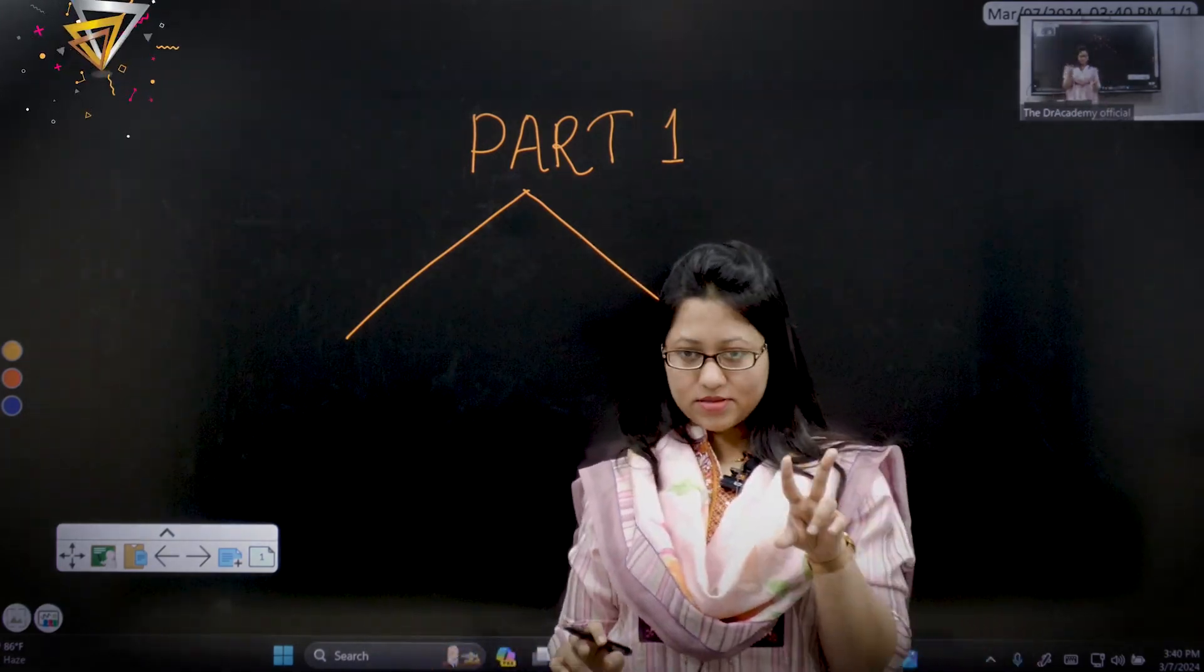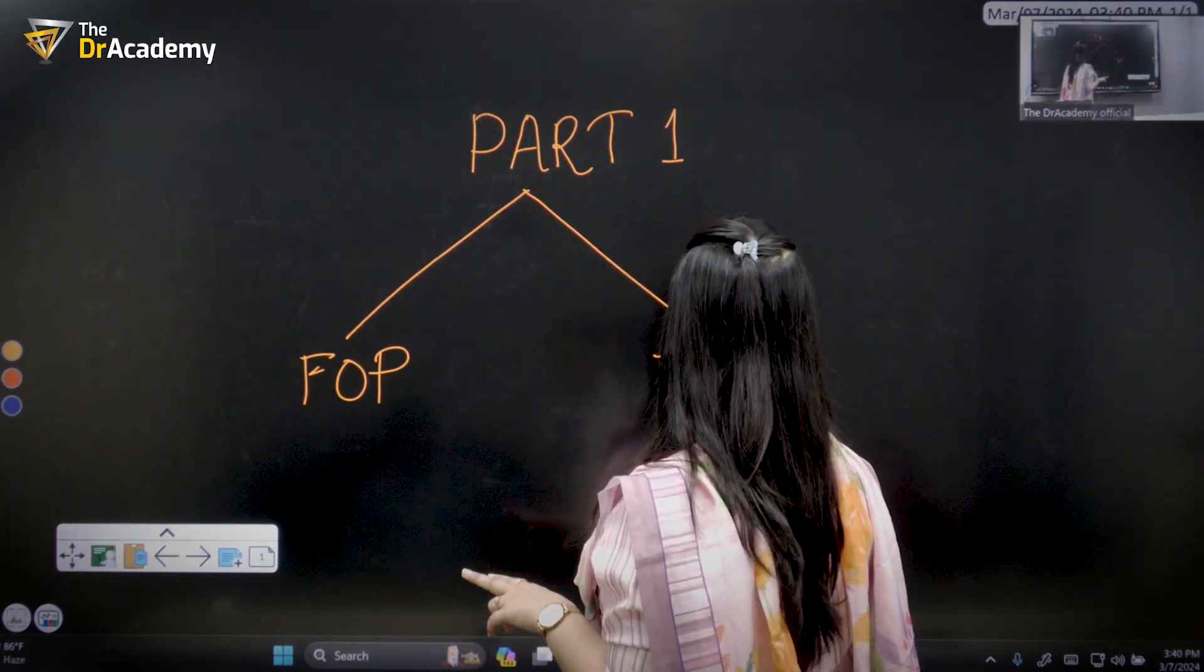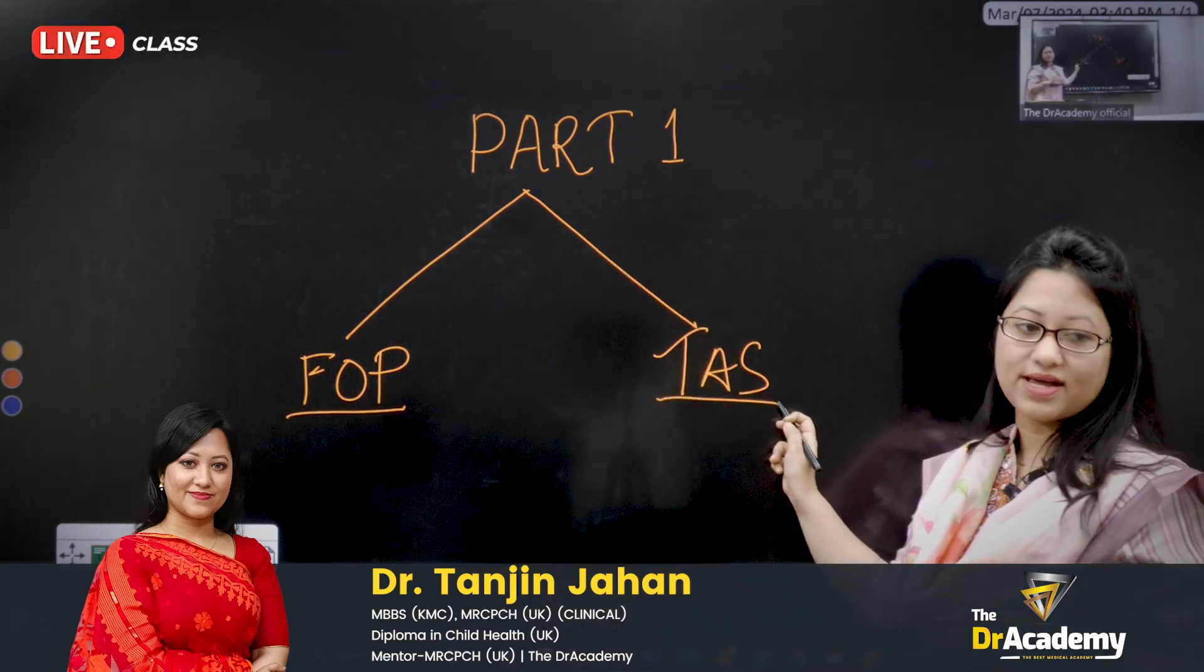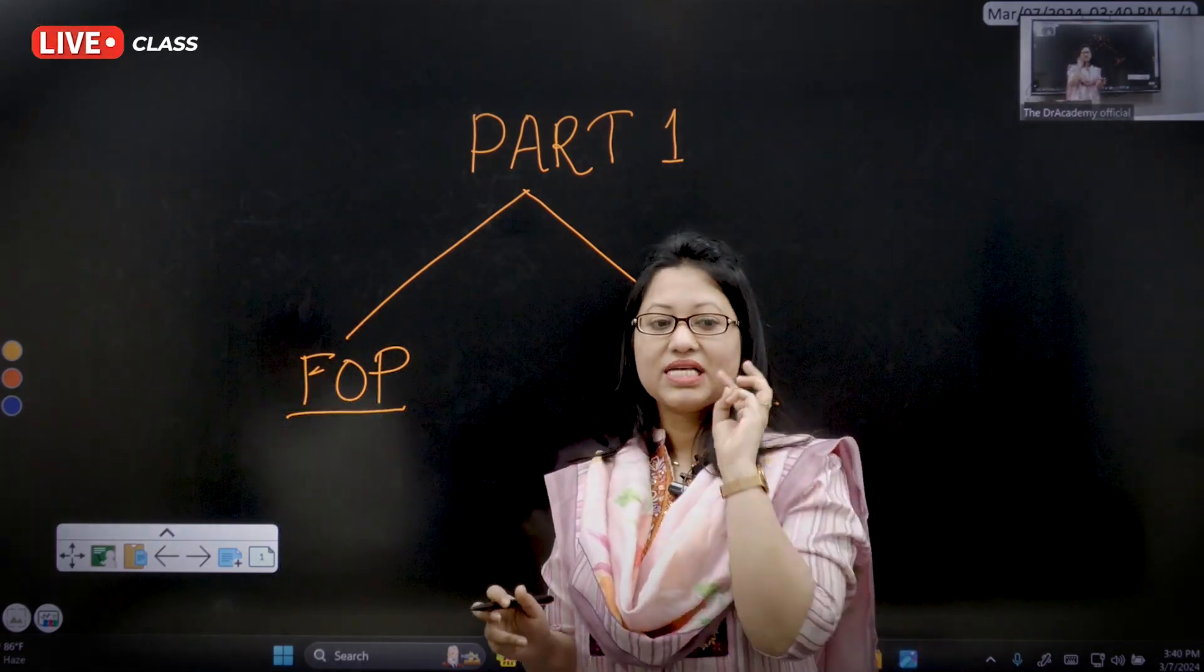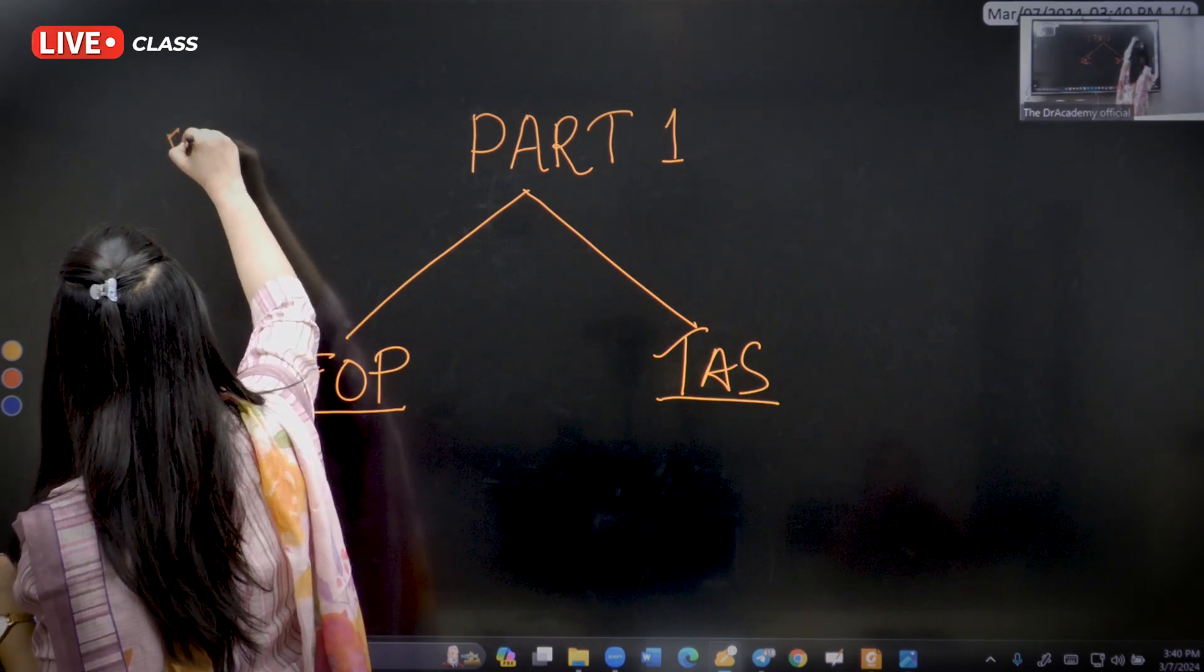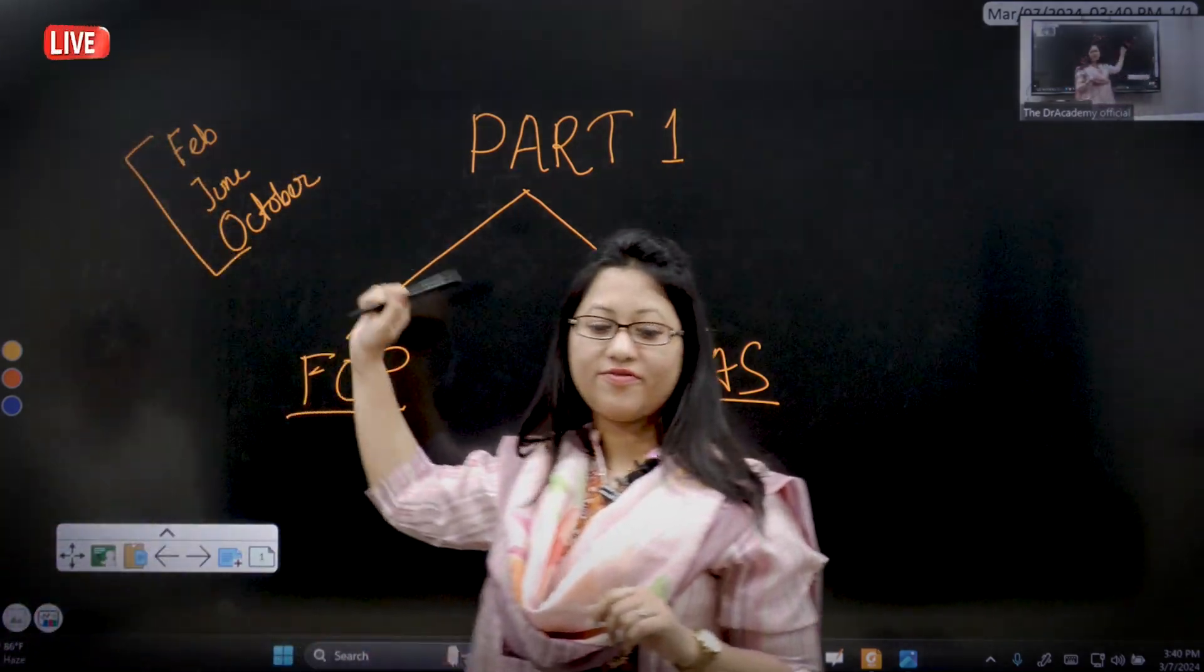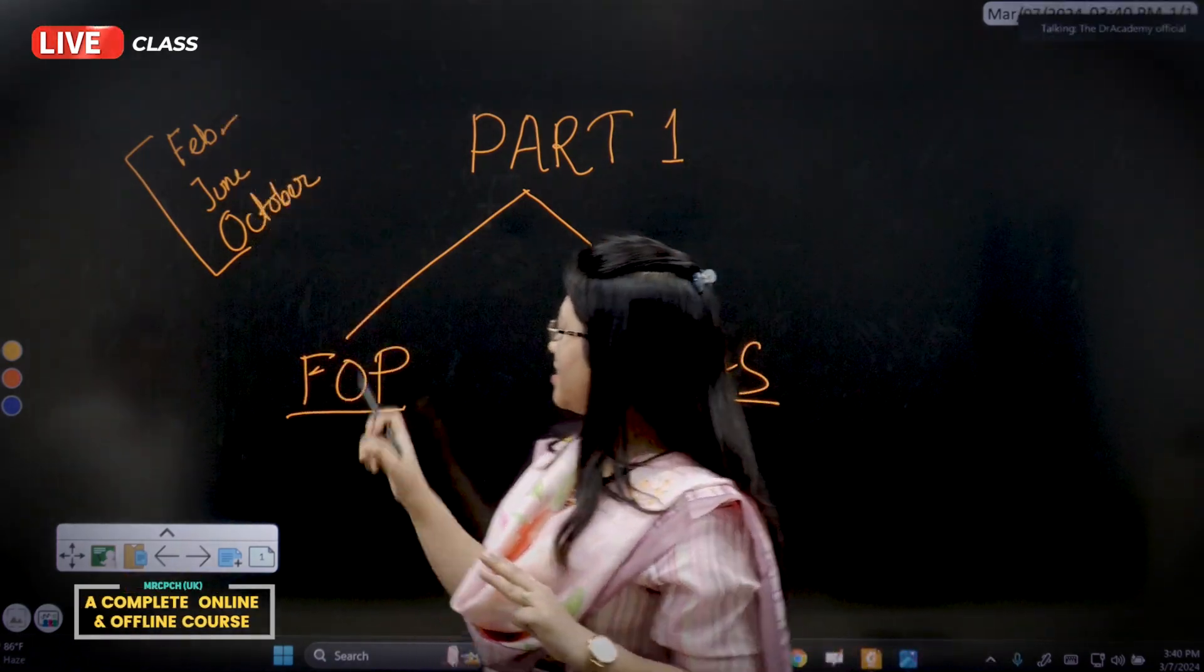The Part 1 exam has two parts: one is Foundation of Practice, and the other is Theory and Science. The exam occurs three times a year, and in every diet there will be two exams.